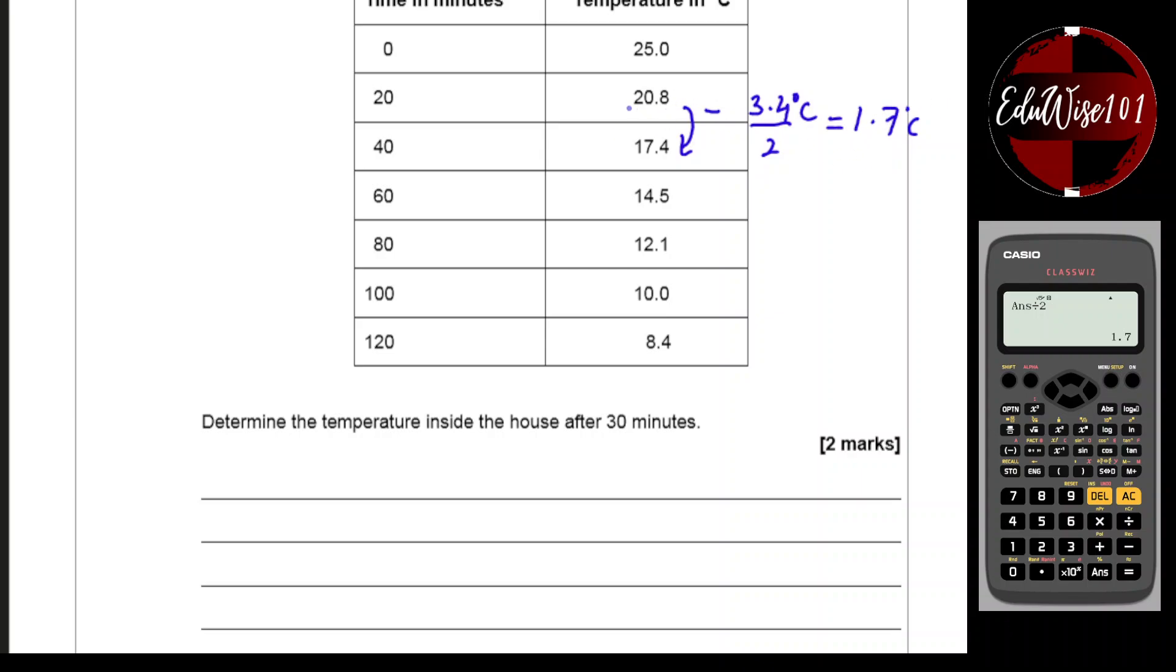So you can add that to 17.4. So let's write this down. 20.8 minus 17.4 divide that by 2 gives me 3.4. Divide by 2 gives 1.7. I'm going to add that to 17.4, which gives me 19.1 degrees.